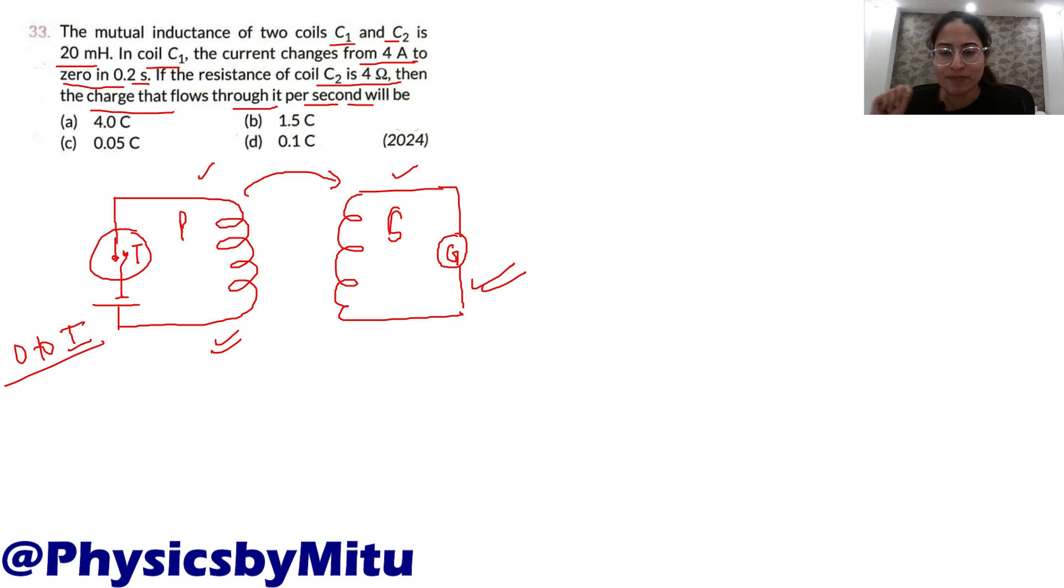This is mutual inductance. The flux linked with the secondary coil is directly proportional to the current in the primary coil. At any instance, if current in the primary coil is i1, then the flux linked is directly proportional to i1.